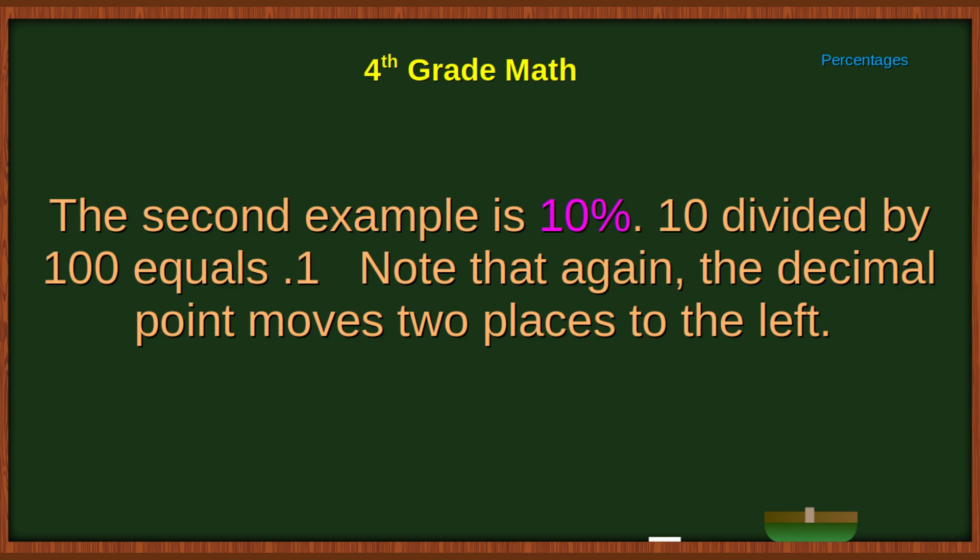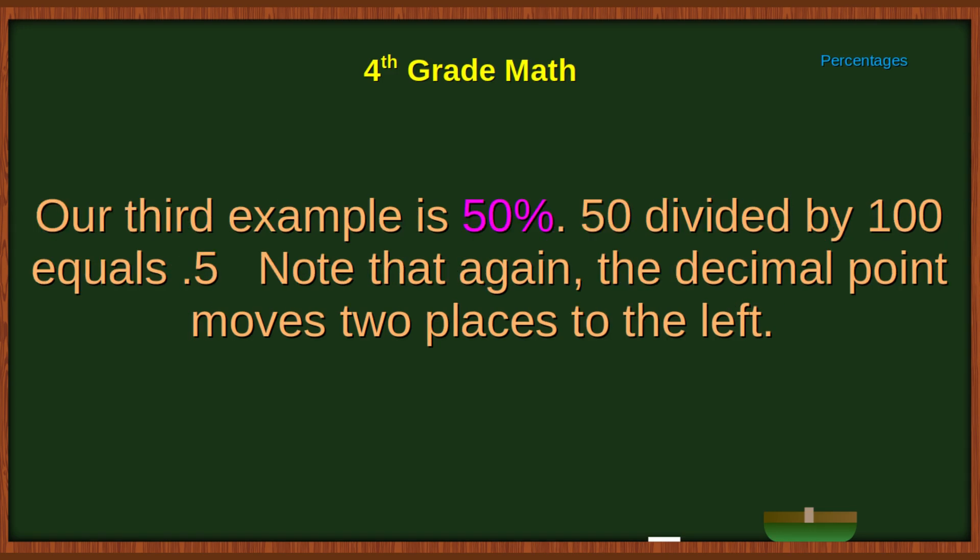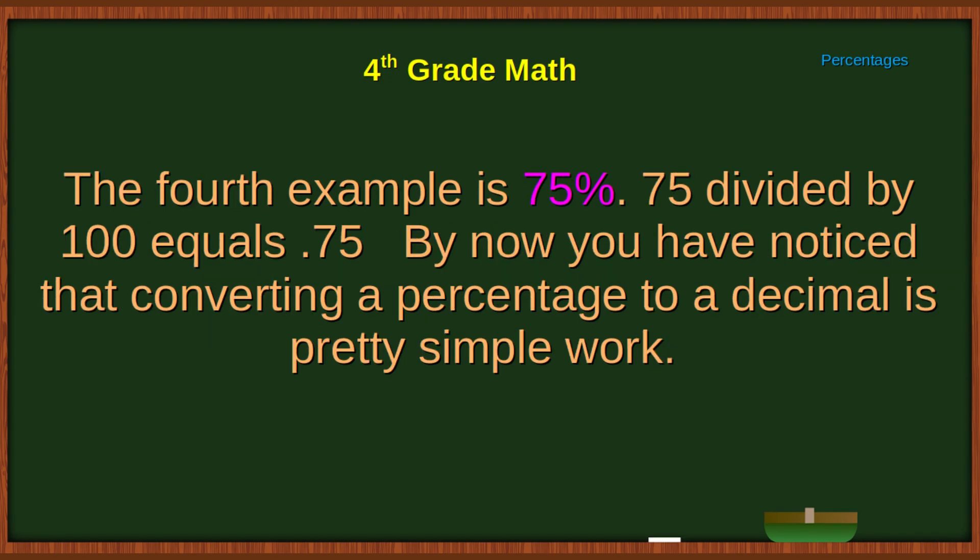Note that again, the decimal point moves two places to the left. Our third example is 50%. 50 divided by 100 equals .5. 75 divided by 100 equals .75.